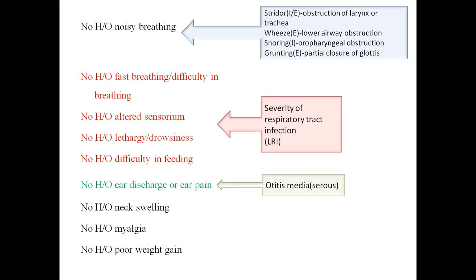To assess severity and delineate URI versus LRI, ask four questions: history of fast breathing or difficulty in breathing, altered sensorium, lethargy or drowsiness, and difficulty in feeding. In severe respiratory tract infection, hypoxia can lead to altered sensorium, lethargy, drowsiness, and inability to take oral feeds. Also ask about ear discharge or ear pain.